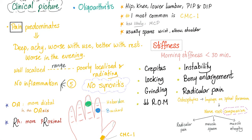Clinical picture of osteoarthritis: it's an oligoarthritis. Pain predominates because it's non-inflammatory. The pain is deep, achy, worse with use, and better with rest — therefore worst in the evening. It ranges from being well-localized to poorly localized and even radiating. No cardinal signs of inflammation: no redness, hotness, swelling, pain, or loss of function. No synovitis.